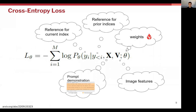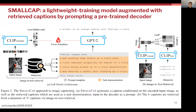To train the model, the authors use cross-entropy loss, which for a generated caption of n tokens is computed as the log of the probability for the reference token at the i-th index, conditioned on all of the references for prior indices. This is done in an autoregressive manner and conditioned on the prompt demonstration, the image features from the CLIP vision encoder, and the weights in the cross-attention layer.